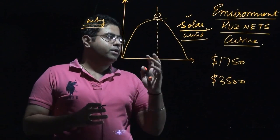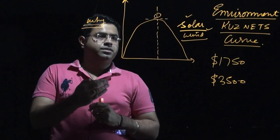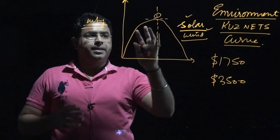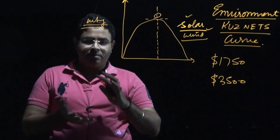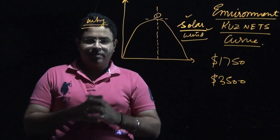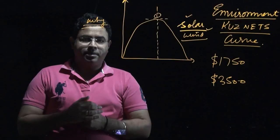So this Environmental Kuznets curve basically believes that after a period of time, people will become more accustomed to having a better environment. They would actually be promoting a better environment.